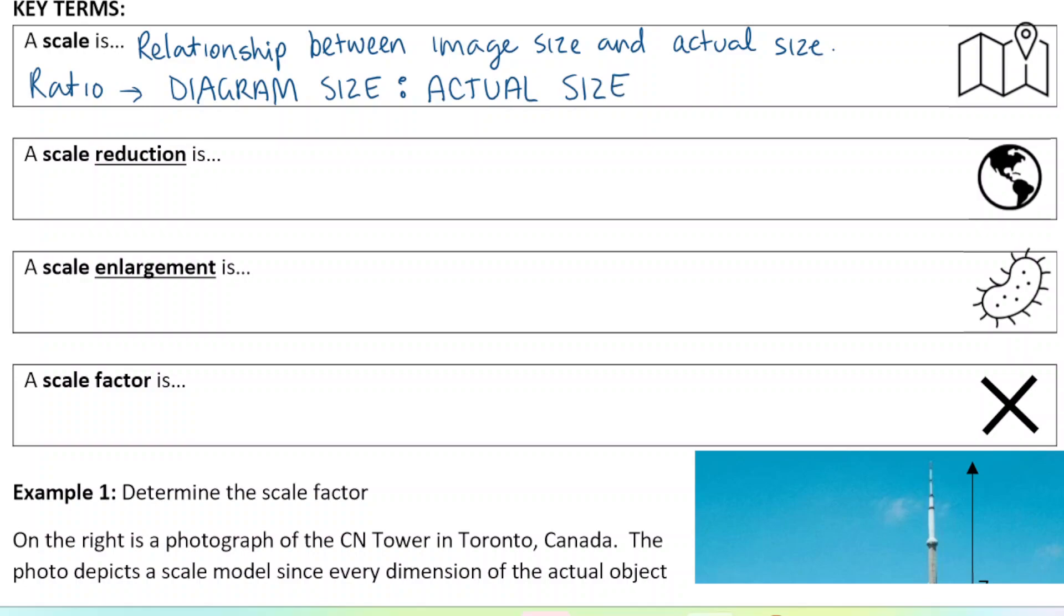A scale reduction is used when we make the image smaller. So it's used to illustrate things that are too large to draw. It would not be practical, right? So buildings, maps, vehicles, planes, anything that would be way too large to draw. Large animals, sports fields.